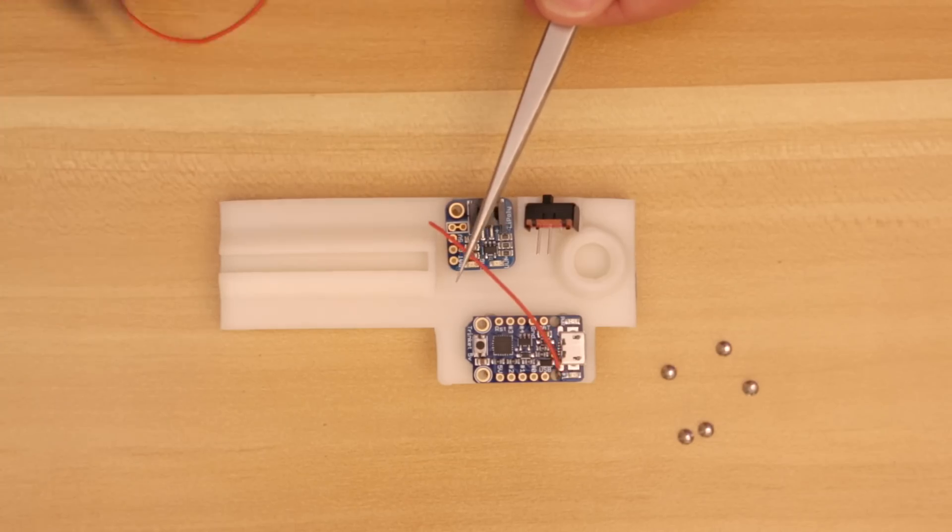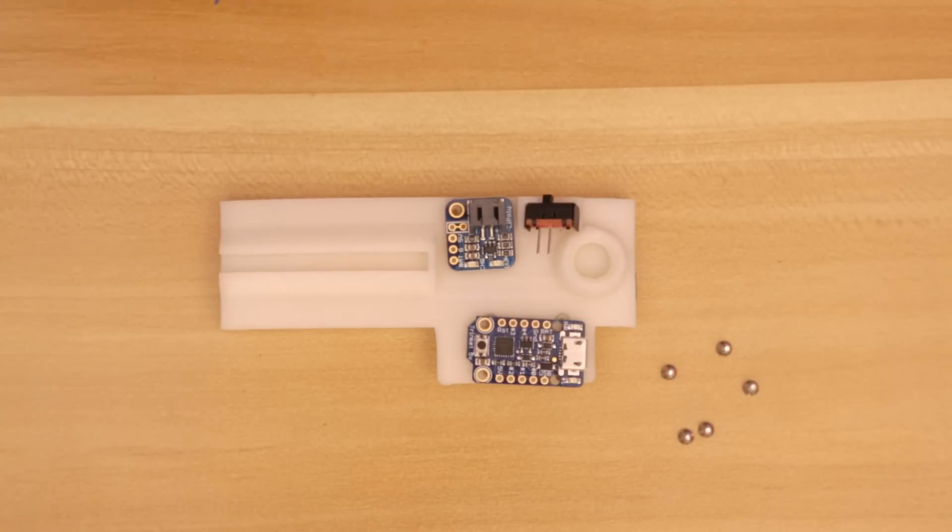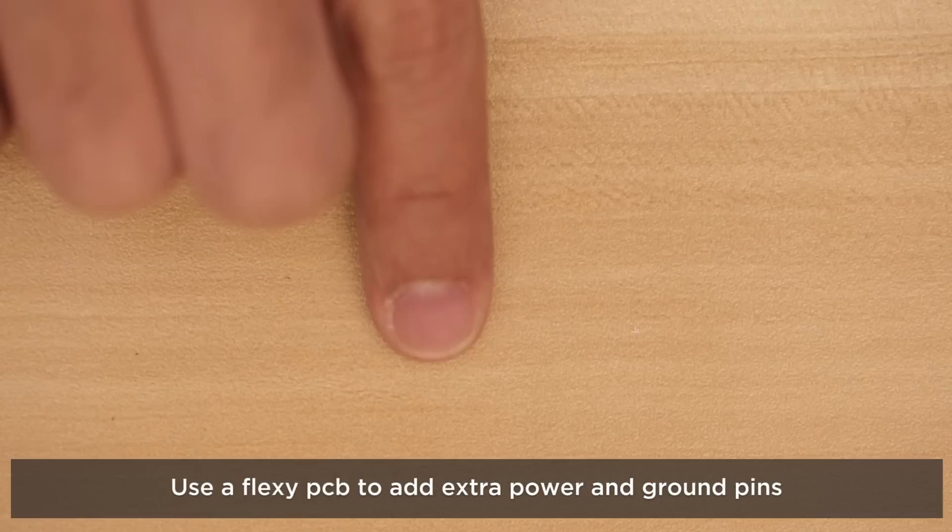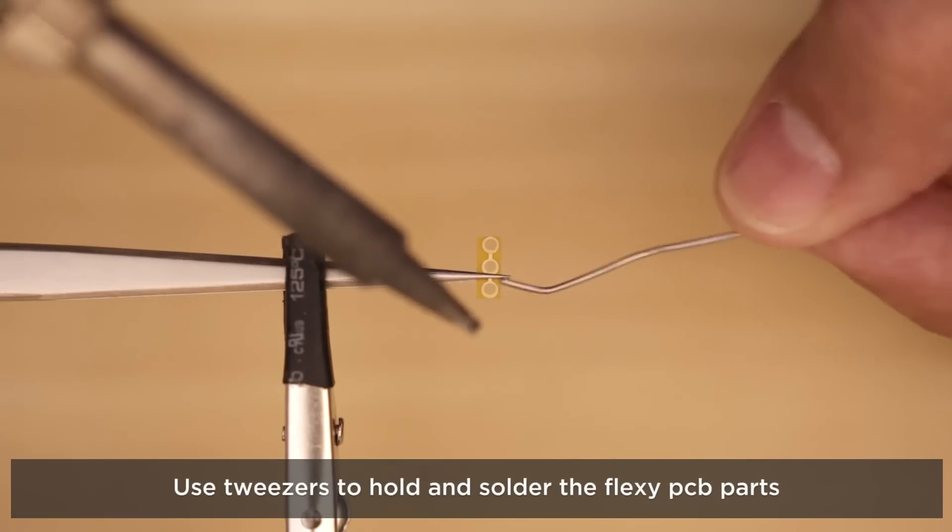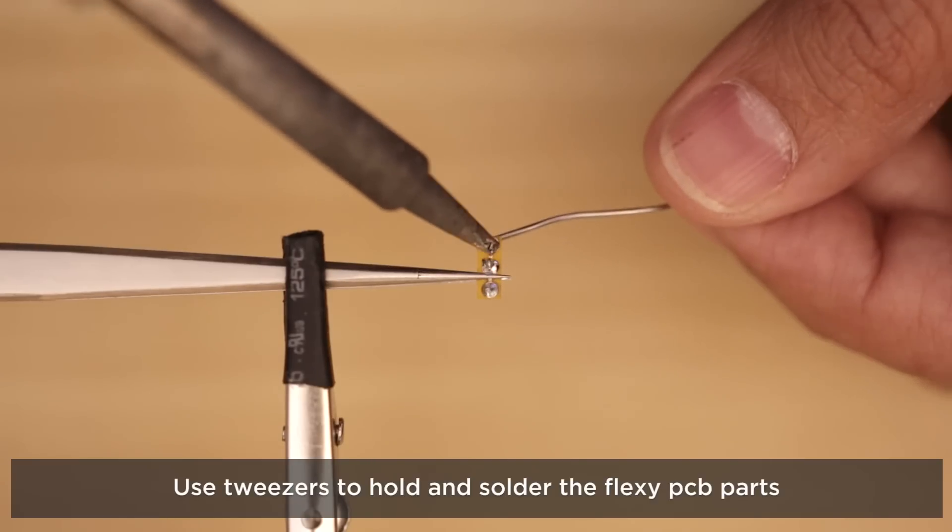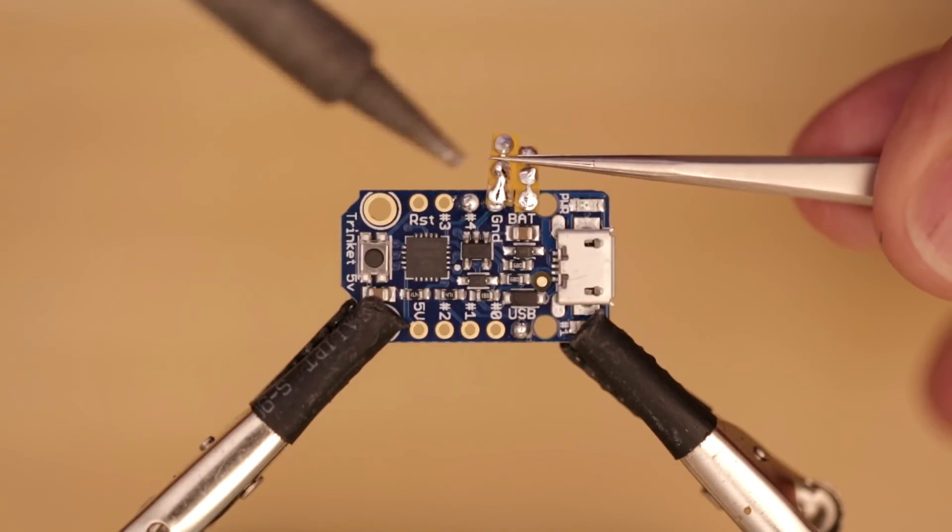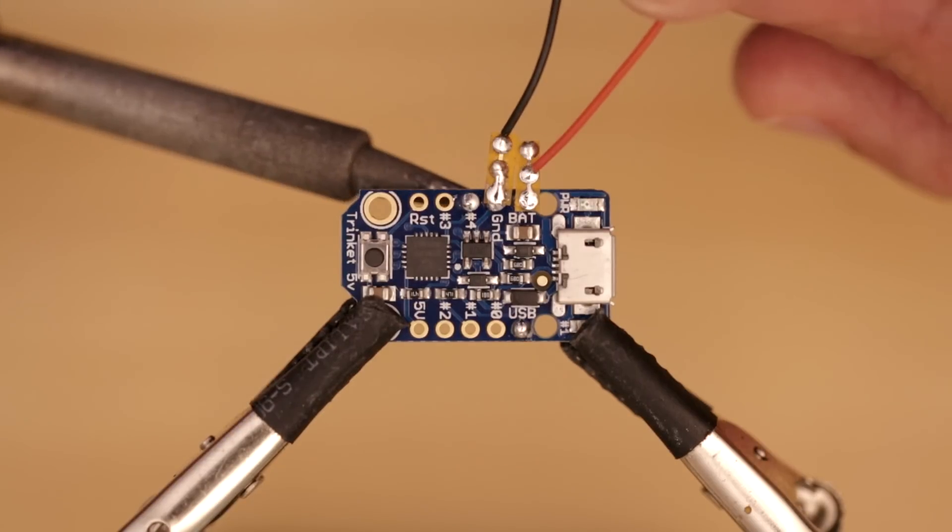Now we can measure out some wires to connect the LiPo backpack to the Adafruit trinket. We used pieces of flex PCB for connecting multiple wires to the power and ground pins on the Adafruit trinket. Use tweezers and third helping hands to keep the flex PCBs steady while soldering. Then attach them to the power and ground pins on the Adafruit trinket. Now we can connect the wires to power, ground, and the USB pin.